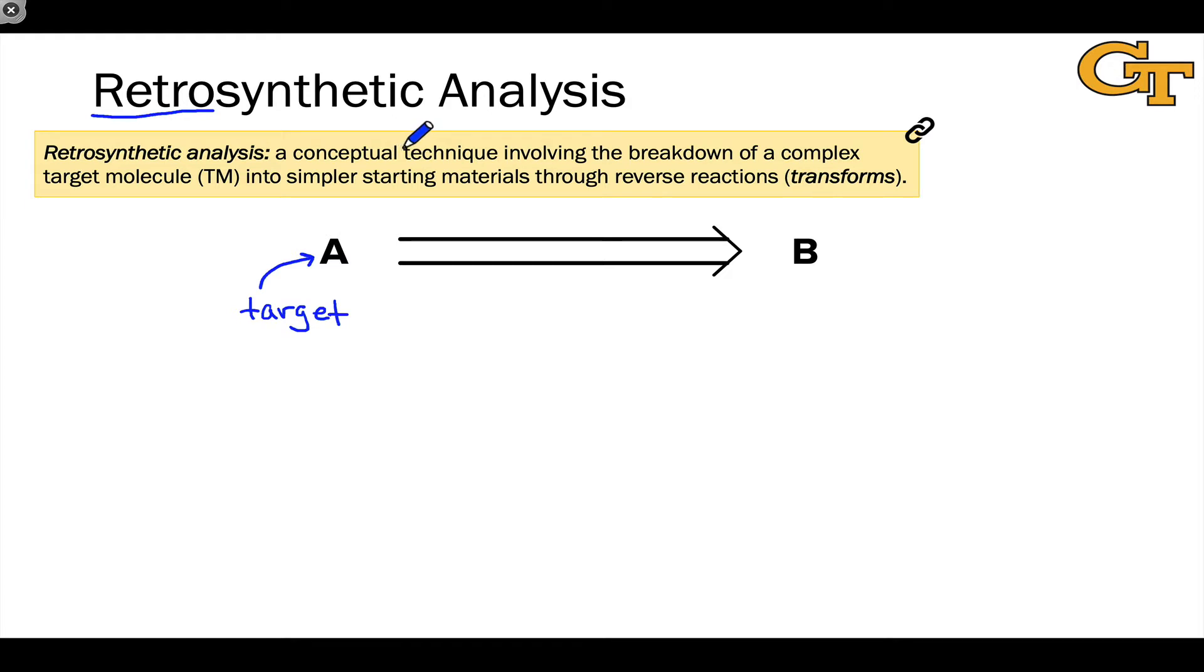Now, in the forward direction to construct the target from the starting materials, we would make use of synthetic transformations, reactions. But in the reverse direction, we're thinking really about running the reaction in reverse. And that's fundamentally different. For that reason, we give that reverse transformation a different name.